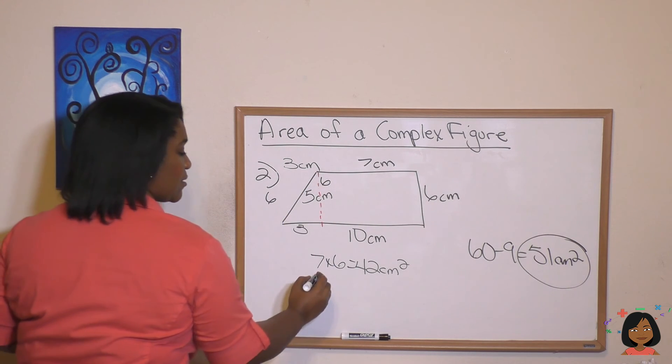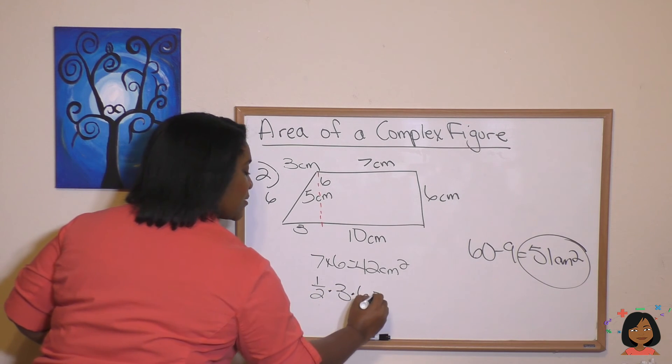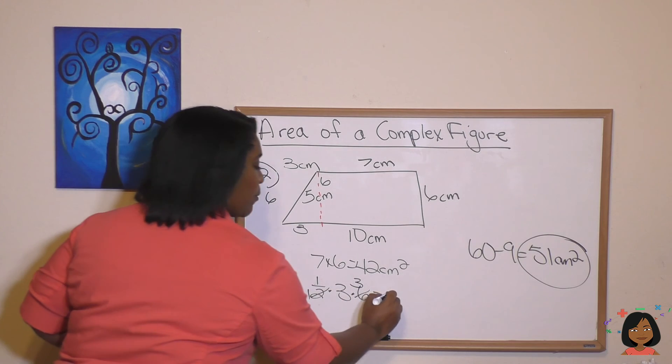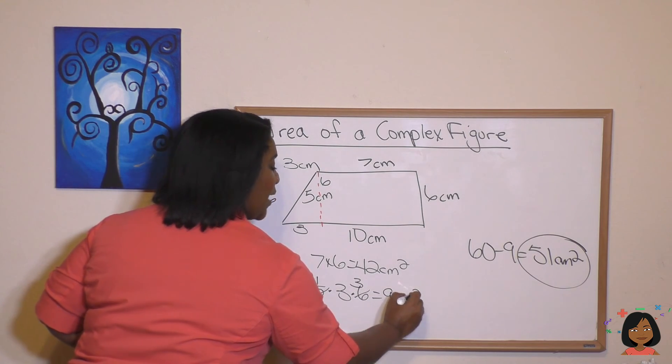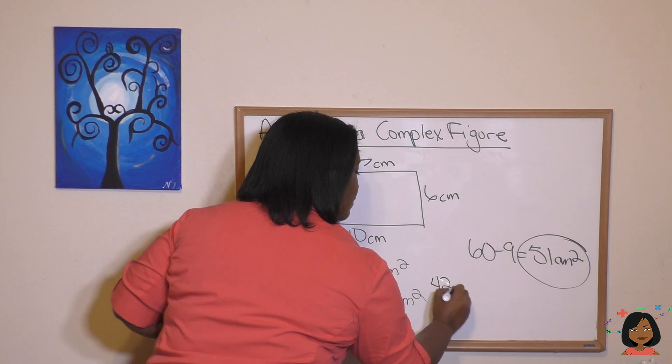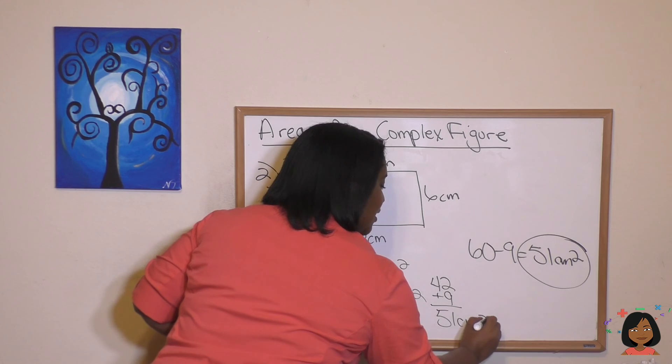3 times 6. So 1 half times 3 times 6. Do some canceling. And we end up with 9 centimeters. So now we're adding 42 plus 9. And guess what that equals? 51 centimeters squared.